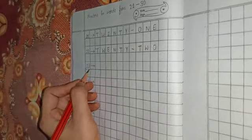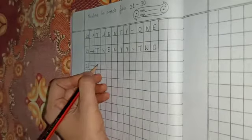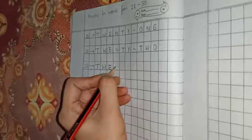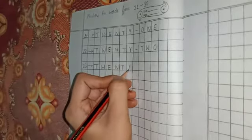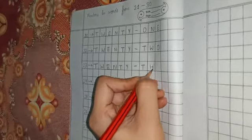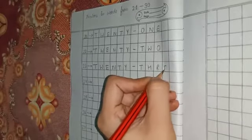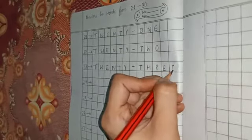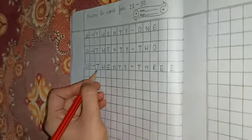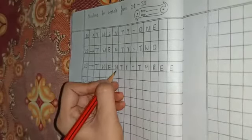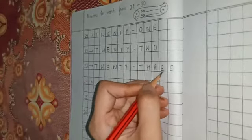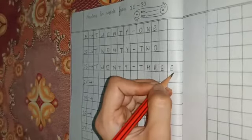This is 23. T-W-E-N-T-Y, then T-H-R-E-E. Twenty-three, 23.